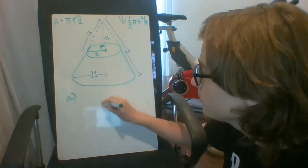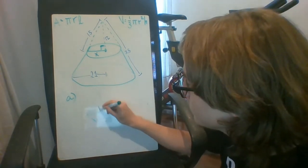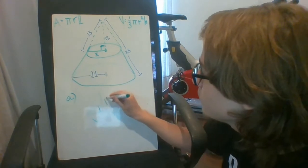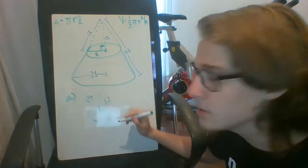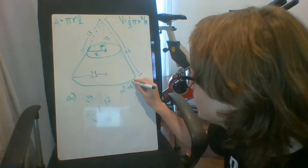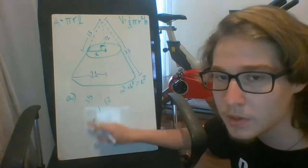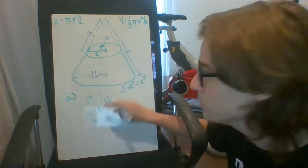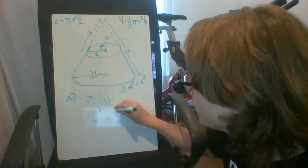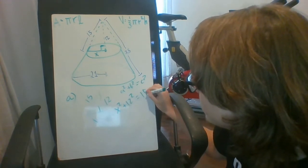So I'm gonna redraw it over here. We have x right there, 12 here, and 15. So using Pythagorean theorem, which is a squared plus b squared equals c squared, with c being the hypotenuse, the long side opposite the right angle, we're gonna plug in and have x squared plus 12 squared equals 15 squared.